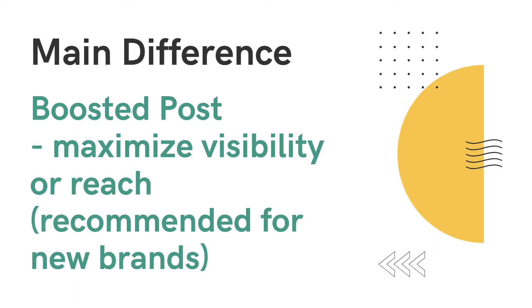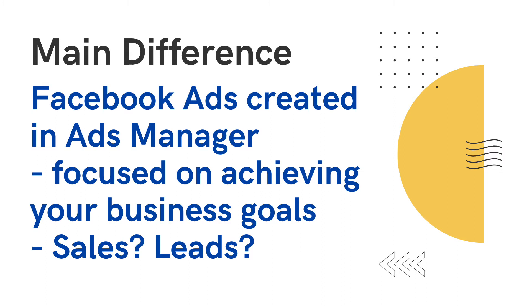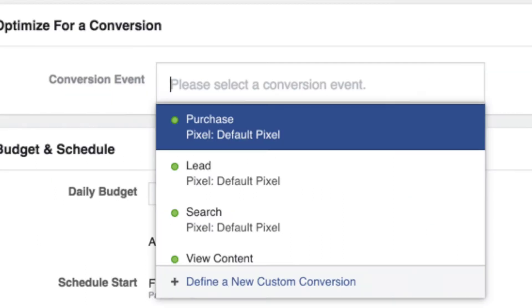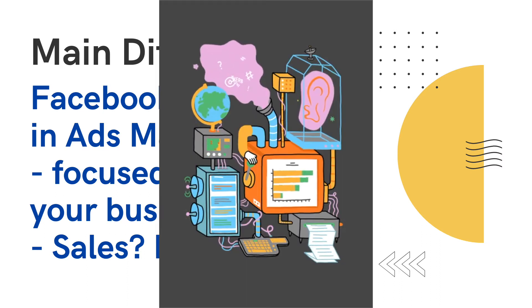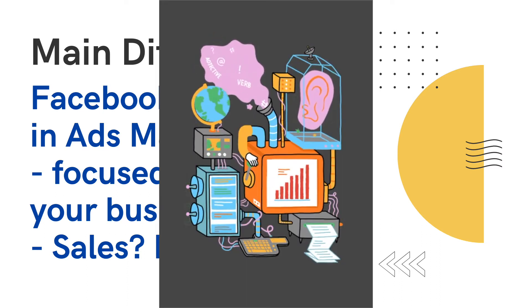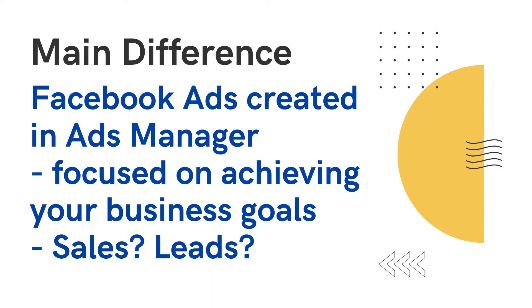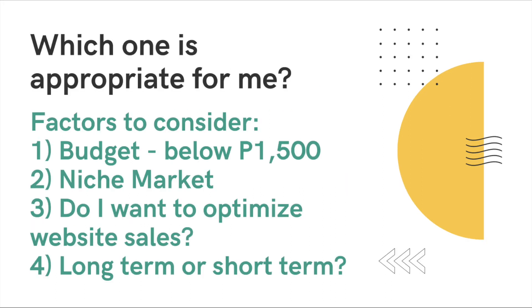The answer would be creating ads via Facebook Ads Manager. The Ads Manager asks you for your objective, so if you choose 'Conversion' (a.k.a. purchase) as the objective, it's like telling Facebook: 'I want to increase my sales.' In turn, Facebook will gather all the data from your Facebook Pixel and look for people who will most likely buy your products or services — not just visit or like your page.